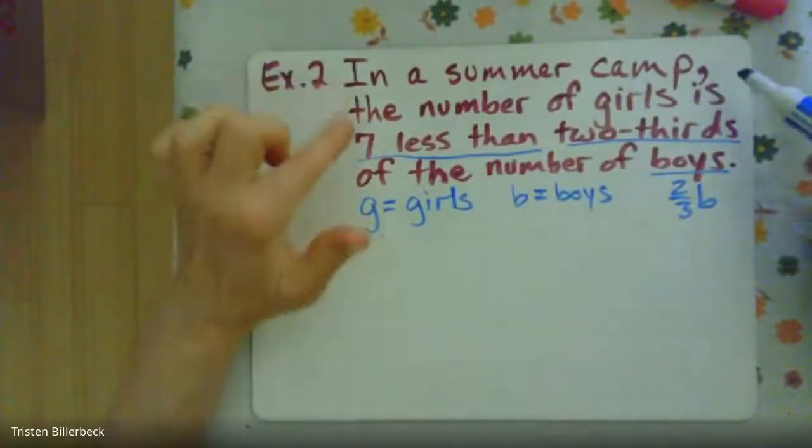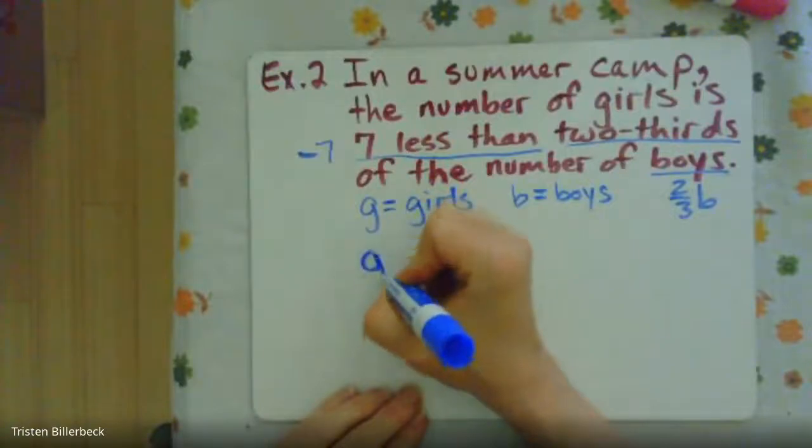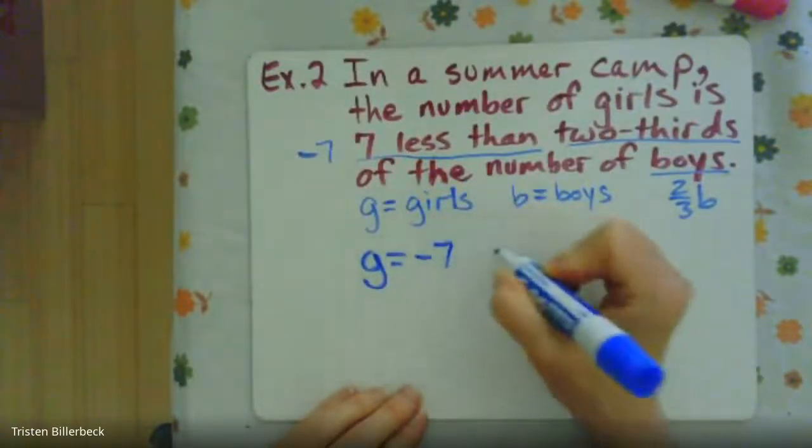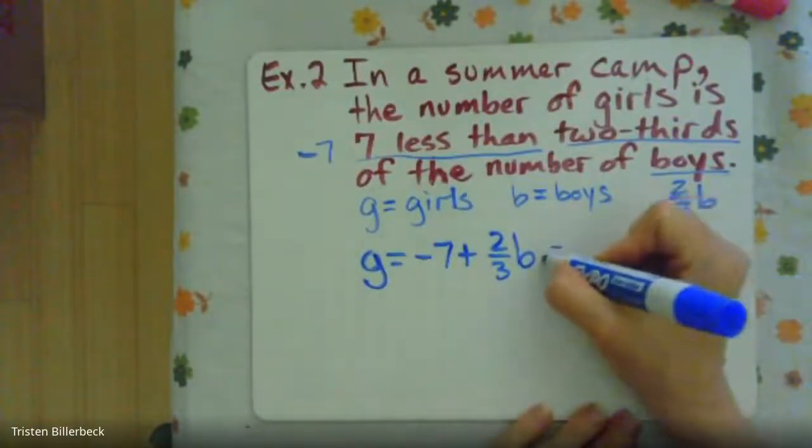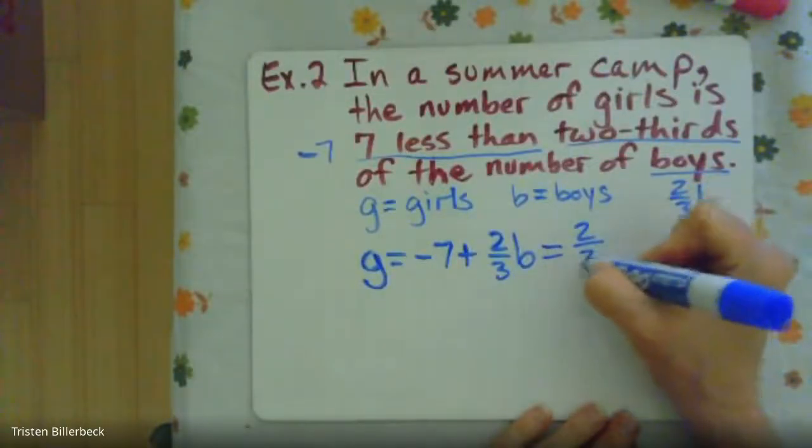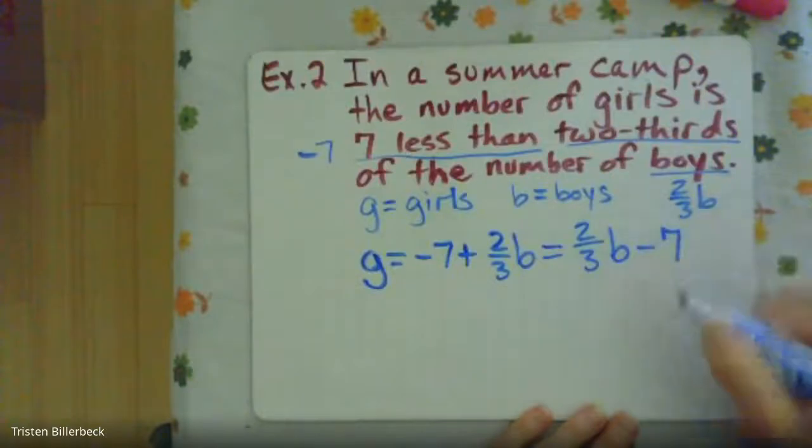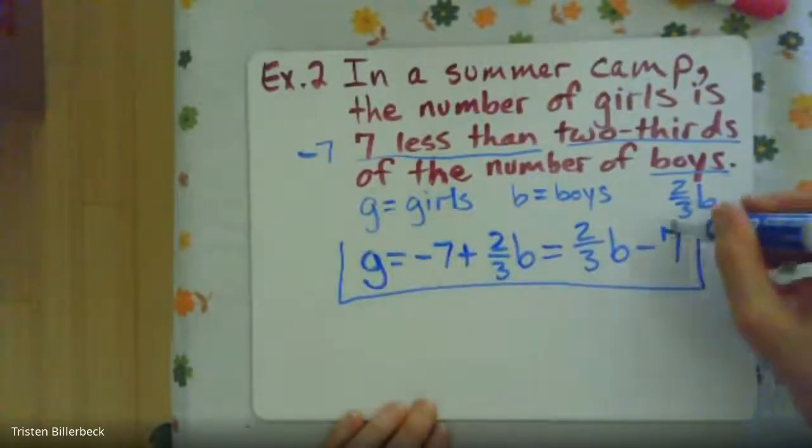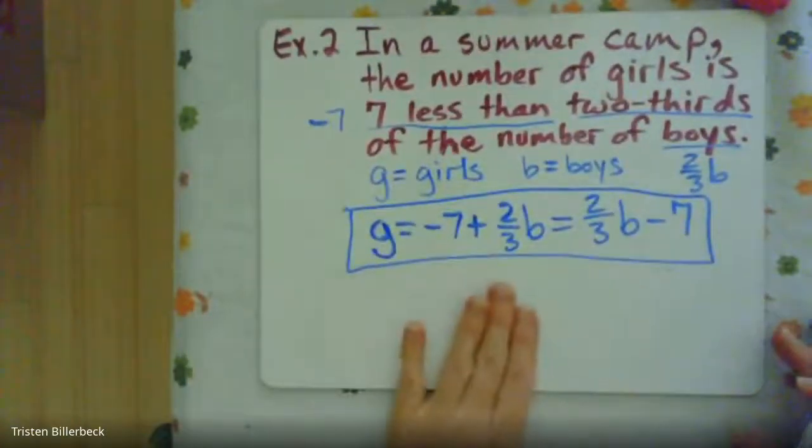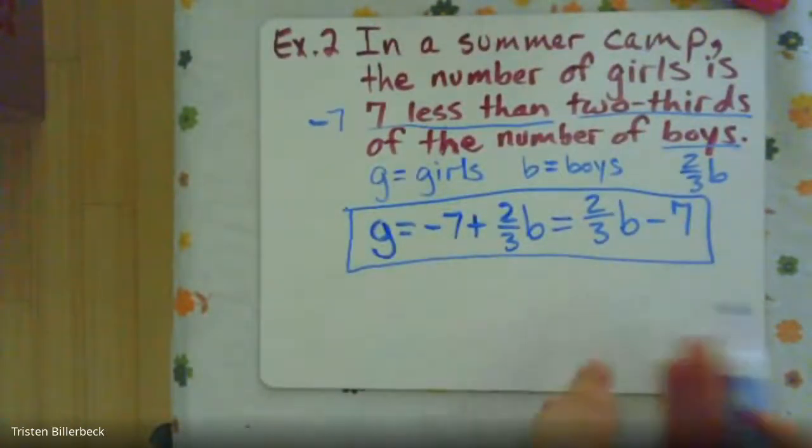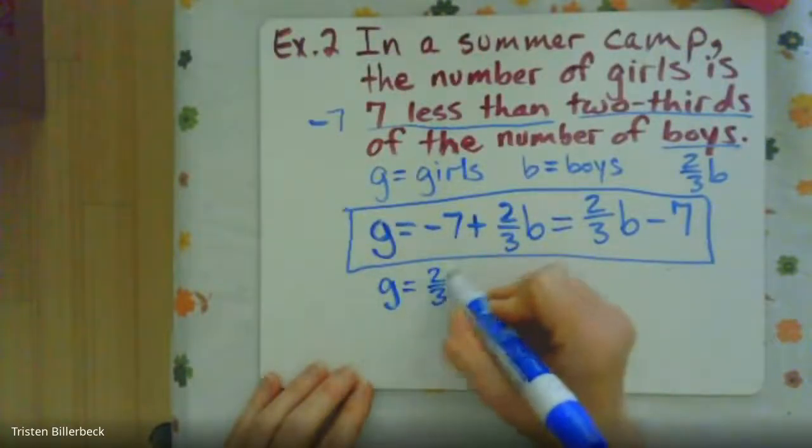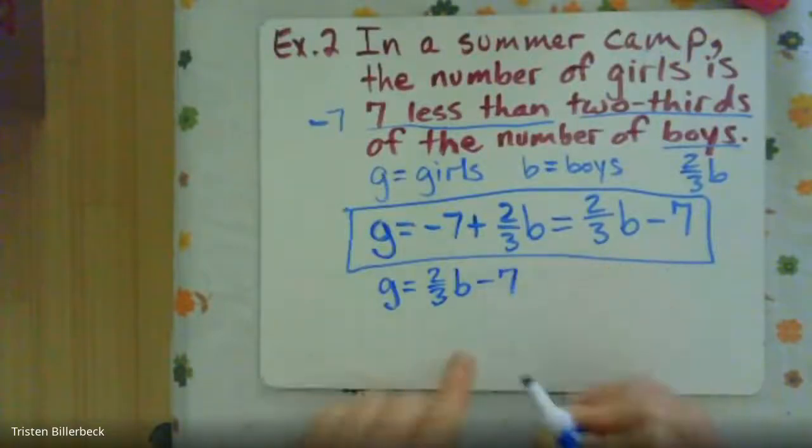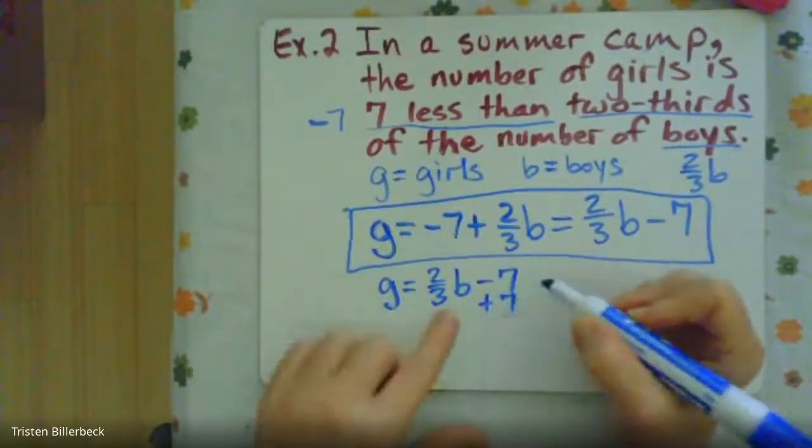So we can say the number of girls in a summer camp is seven less than two-thirds of the boys. Or we could write that as two-thirds the boys minus seven. So that would be how we would write the girls equation. Now, if we want to rearrange this in terms of finding the boys, we would have girls equals two-thirds of the boys minus seven. So we'd use an additive inverse here.